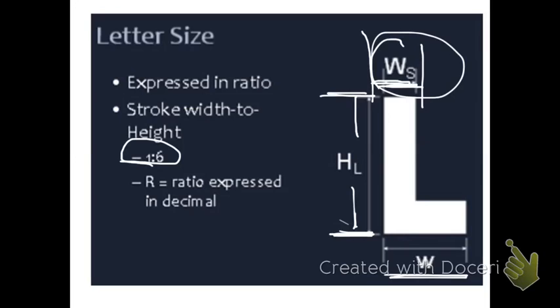The recommended ratio for white text on a black background, which is what we actually have here, this is a lighter letter on a darker background, is 1 to 8 to 1 to 10, a little bit higher ratio there.